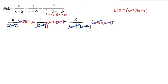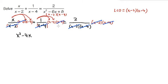Here we have the x in front of a parenthesis, so we'll take this x and distribute it into the parenthesis. x times x gives us x squared, and x times negative 4 gives us minus 4x. For the second term, we have positive 1 and we distribute it — it's just a good habit. 1 times x is plus x, and 1 times negative 2 is negative 2. And this is equal to the number 2, since everything else was cancelled out.